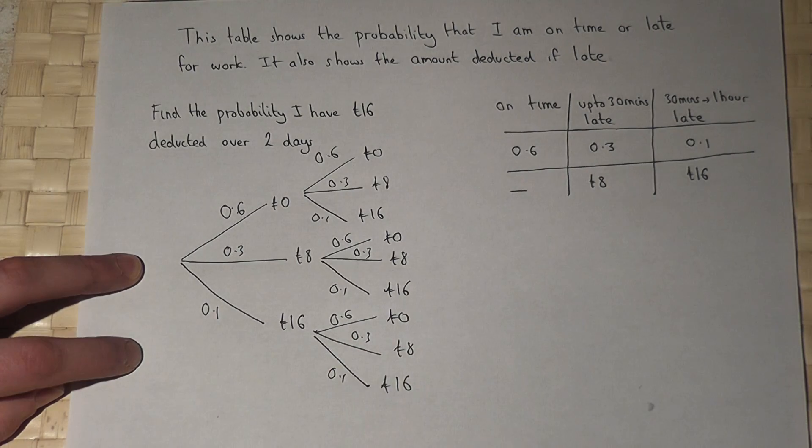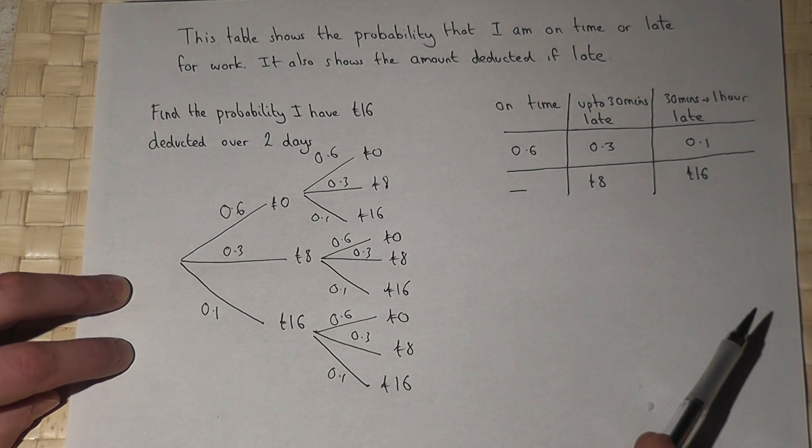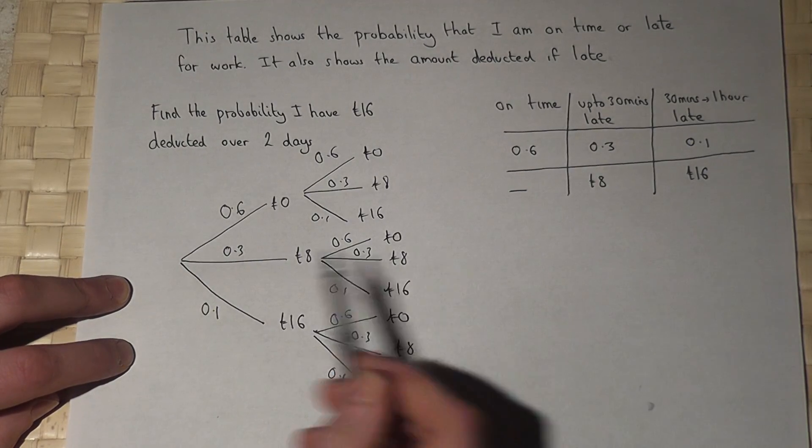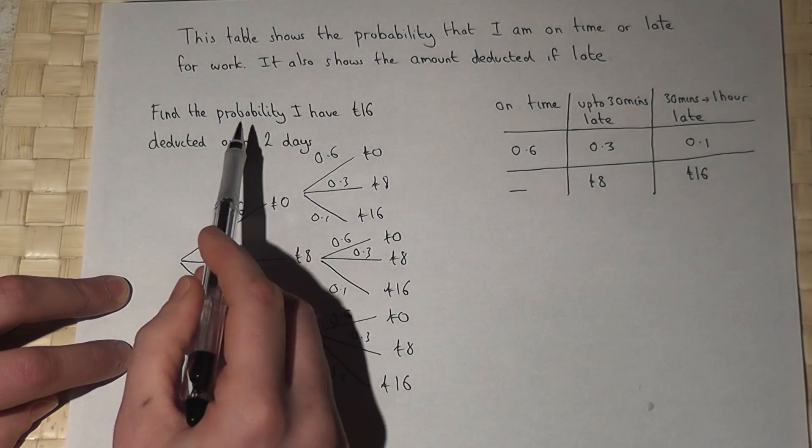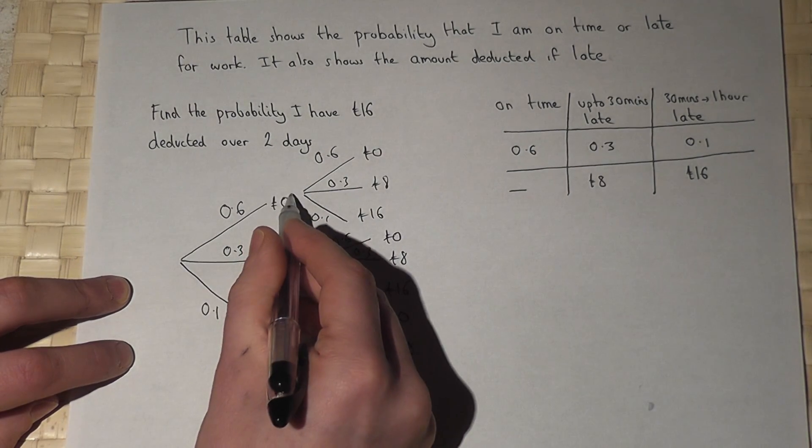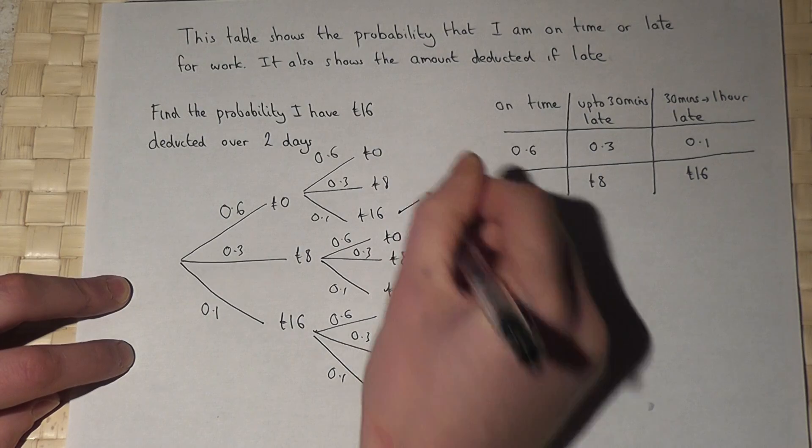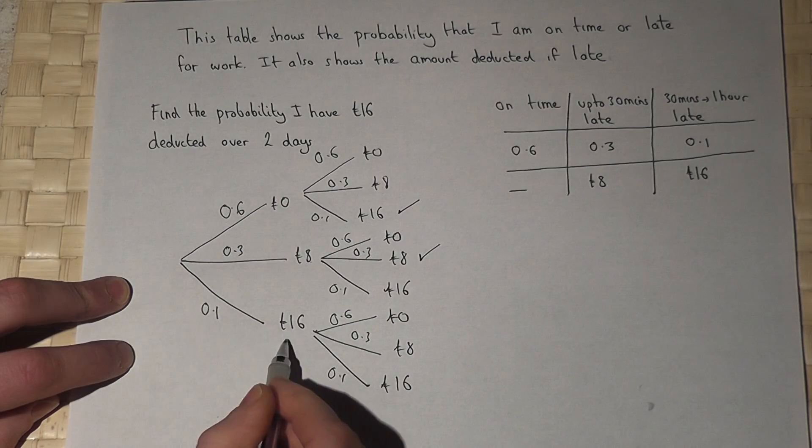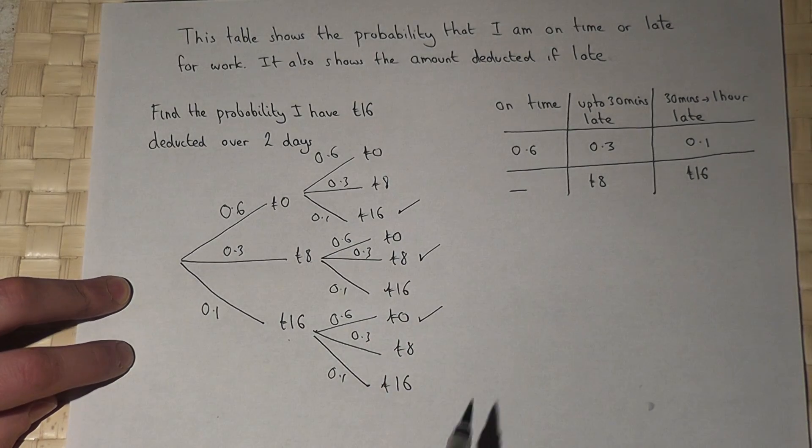The question says what's the chance I have £16 deducted over two days. The method is to find the options which lead to £16 being deducted. So there's this option here: 0 pounds then 16 pounds. There's 8 pounds and then 8 pounds, and there's 16 pounds and then no pounds. Those three options lead to £16 exactly being deducted.